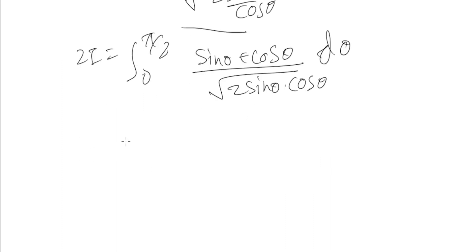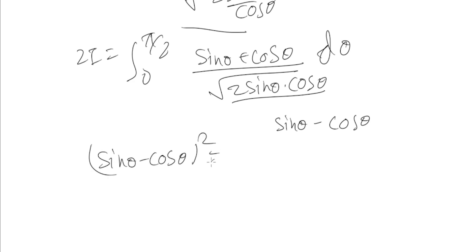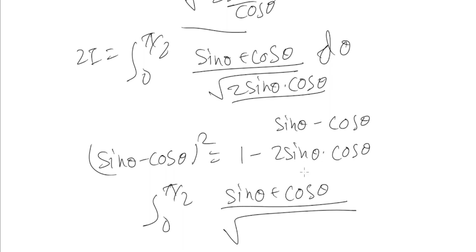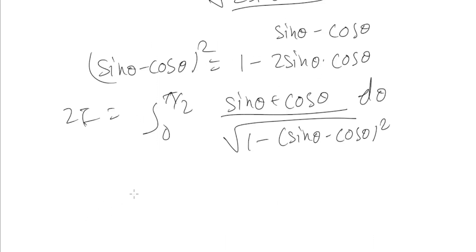Now we express the denominator in terms of (sin θ − cos θ). We know (sin θ − cos θ)² = sin² θ + cos² θ − 2 sin θ cos θ = 1 − 2 sin θ cos θ. So we replace 2 sin θ cos θ: the expression becomes (sin θ + cos θ) / √(1 − (sin θ − cos θ)²) dθ. This is 2I.